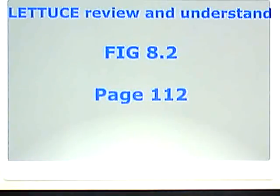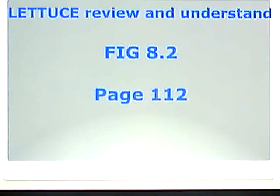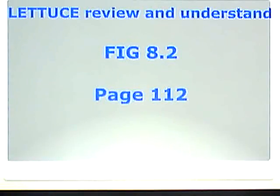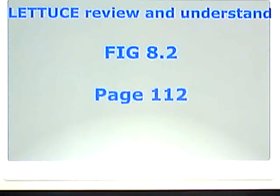Let's review figure eight-two on page 112. The little black dots are what's actually there. You have a longer pulse creating a more inaccurate image, and a shorter pulse creating the actual, more detailed, correct image. We're talking about spatial pulse lengths here — I mentioned frequency earlier, please disregard that for now.